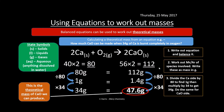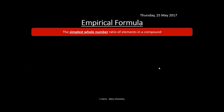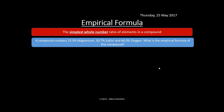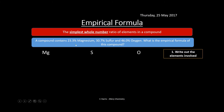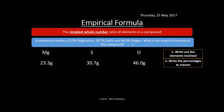The empirical formula is the simplest whole number ratio of elements in a compound. For example: a compound contains 23.3% magnesium, 30.7% sulfur, and 46.0% oxygen. Write out the elements (Mg, S, O), then treat the percentages as masses in grams: 23.3 g Mg, 30.7 g S, 46.0 g O.